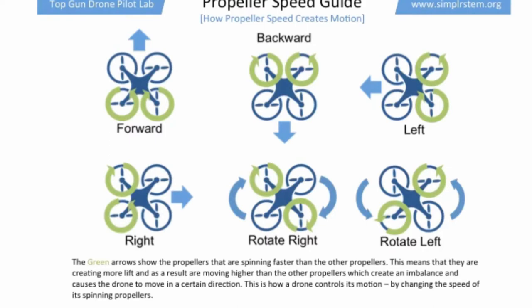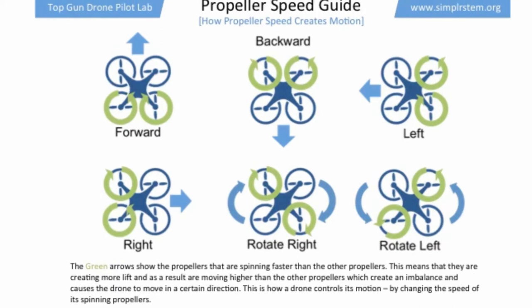So the first thing you notice when you look at the guide is there's an image of a drone. Wherever you see the green circles over those particular propellers and motors, that indicates that those propellers are spinning faster than the other two propellers.